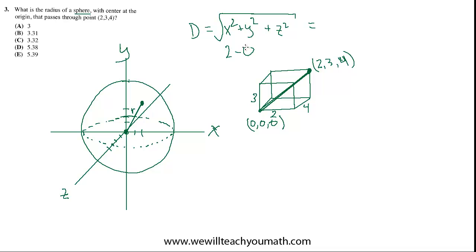(2 minus 0) squared for x plus (3 minus 0) squared for y plus (4 minus 0) squared for z.